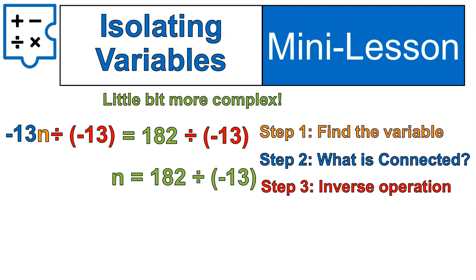Which gives us n by itself on the left, and 182 divided by negative 13. When we solve and simplify, of course, 182 divided by negative 13 is negative 14.